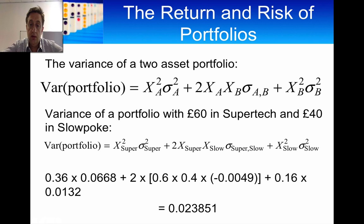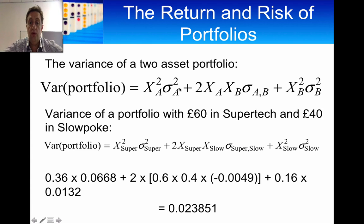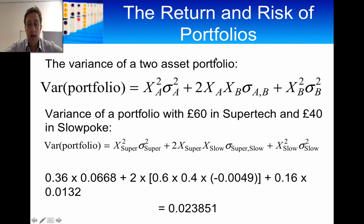We are now going to calculate the variance of a portfolio. The formula is more complex because we're dealing in squares. There are two components: the squared terms, which are the weight of Supertech squared times the variance of Supertech, plus the weight of Slowpoke squared times the variance of Slowpoke. Then there is the middle element, which is two times the weight of Supertech, times the weight of Slowpoke, times the covariance between Supertech and Slowpoke.